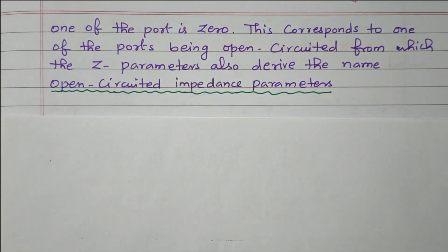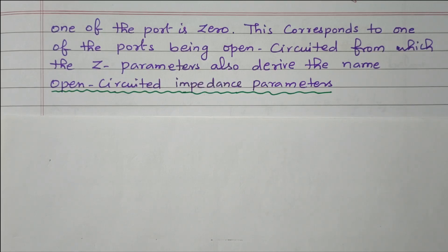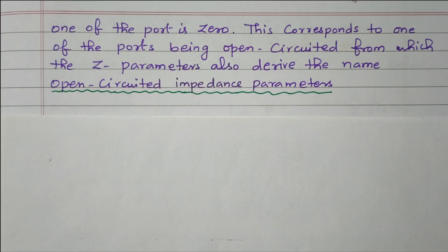So in this video, we discussed the two port network and its open circuit impedance Z parameters. By making any one port open-circuited so that its current is zero, we derived the four impedance parameters: input impedance, output impedance, forward transfer impedance, and reverse transfer impedance, from which we also drew the equivalent circuit. Subscribe to the channel for more videos and notifications. Soft copy of this material is available in the drive; the link is given in the description box. Thank you for listening.